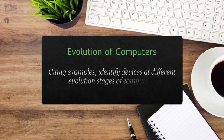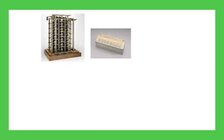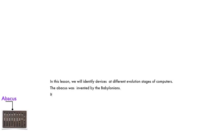We present evolution of computers, citing examples and identifying devices at different evolution stages. In this lesson, we will identify devices at different evolution stages of computers. The abacus was invented by the Babylonians. It was a device made with pebbles and stones.